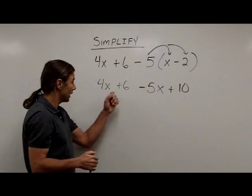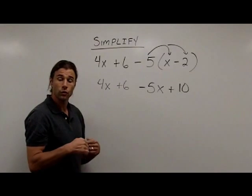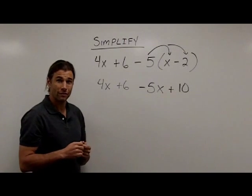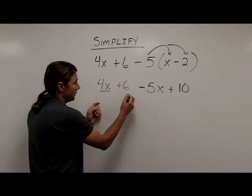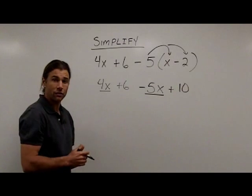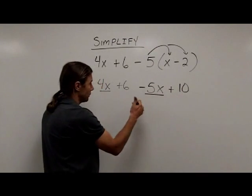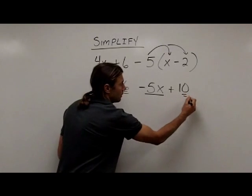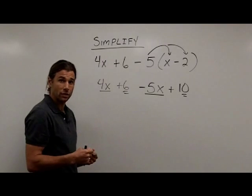Okay, so we're done multiplying. You can see I have addition and subtraction left. So what I'm going to do now is go through and combine my like terms. Remember, like terms have to have matching variable parts. So notice 4x and negative 5x, those are like terms. I also have like terms that are constant terms. The positive 6 and the positive 10, those are like terms. We can combine those together.